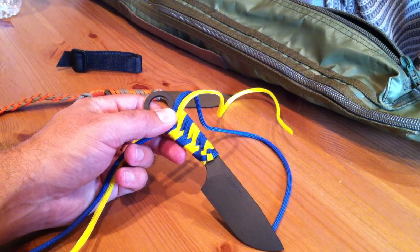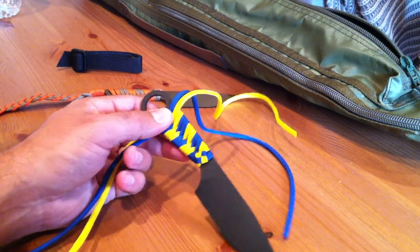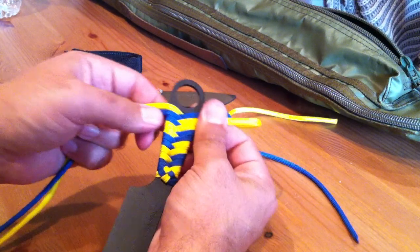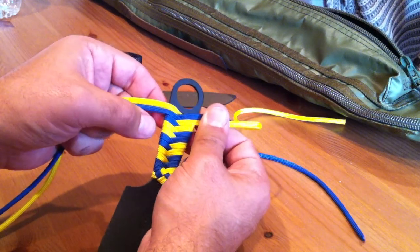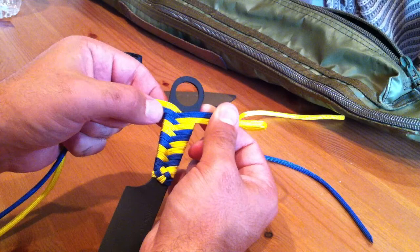This is part three on the series on how to wrap the handle on your Shrike. Once you get to the point where your wrapping goes all the way to the top here, to this circle,